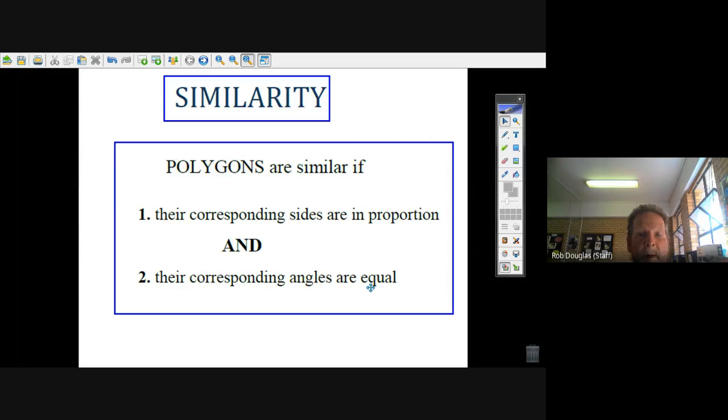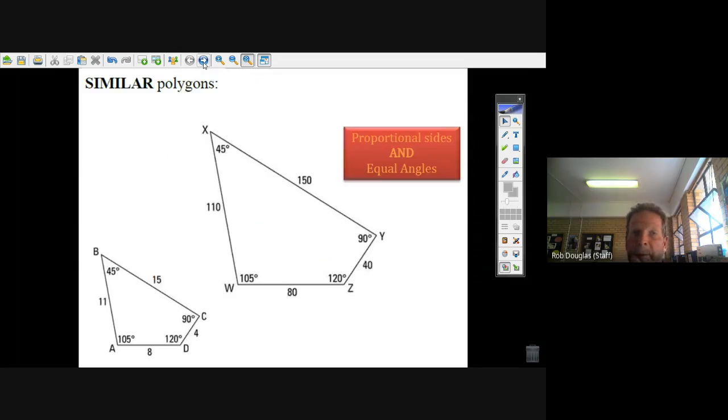Well, poly means many, and here we've got a one, two, three, four-sided polygon, and here's another four-sided polygon. And for these polygons to be similar, their angles have to match up and their sides have to be in proportion.